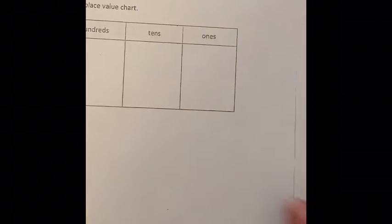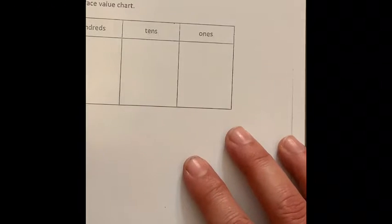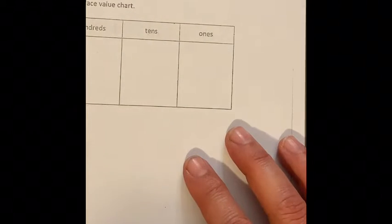They want you to go ahead and put this in old trusty, and old trusty happens to be the place value chart. I started off with two tens times four.